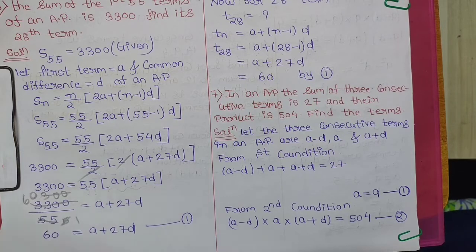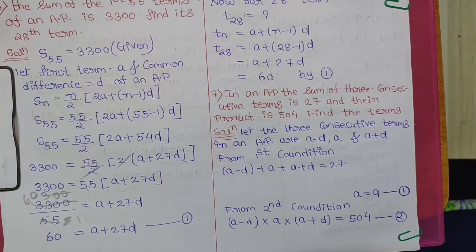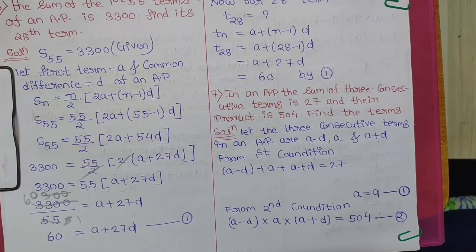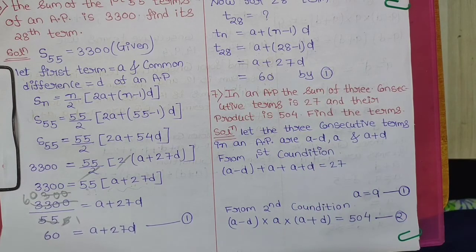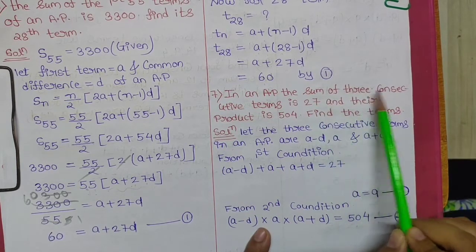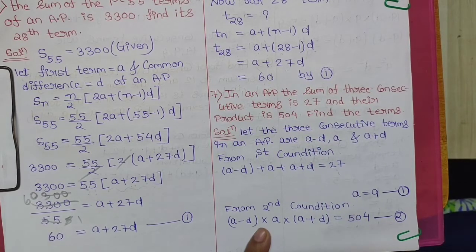Question 7: In an AP, the sum of 3 consecutive terms is 27 and their product is 504. Find the terms. The first condition is that the addition of all three terms equals 27. The second condition is that their multiplication equals 504. Let the 3 consecutive terms be (A − D), A, and (A + D).